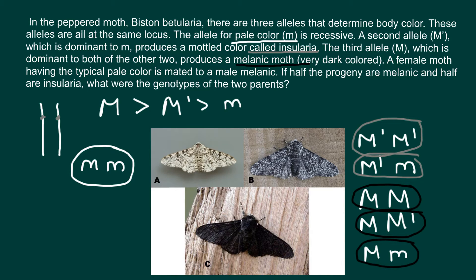Returning to our problem: the female moth has the typical pale color, meaning her genotype can only be small m / small m. The male is melanic, so one of three genotypes is possible for him. The problem is not as complicated as it may seem — we've already solved 50% of it, because the pale parent's genotype is known with 100% certainty.